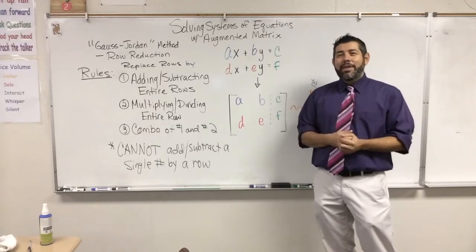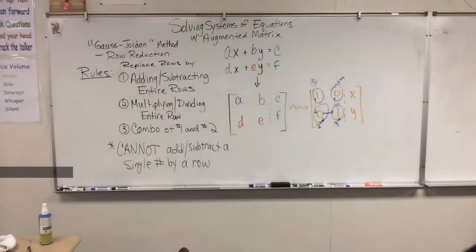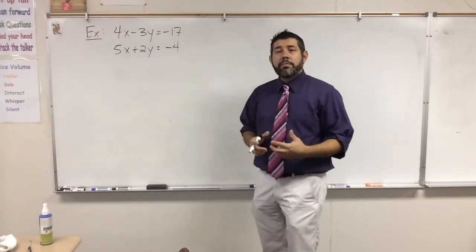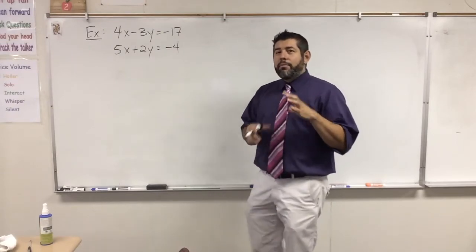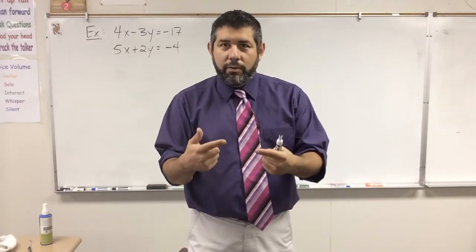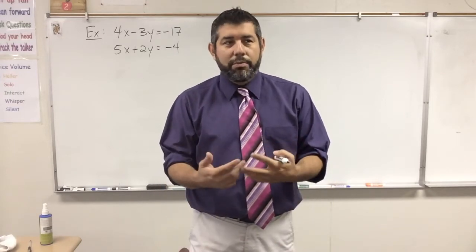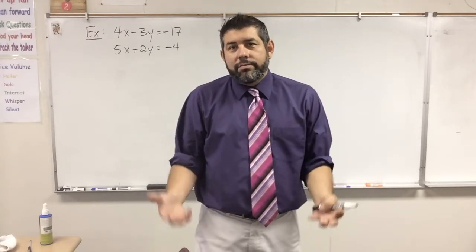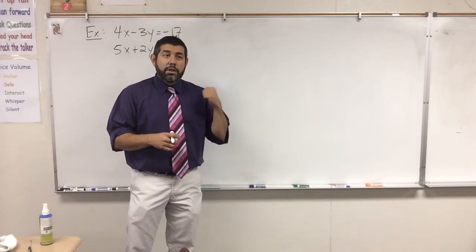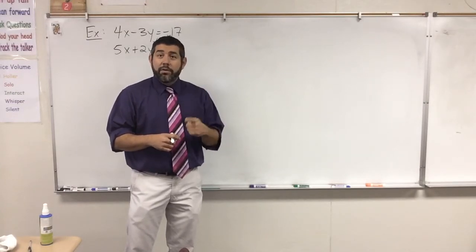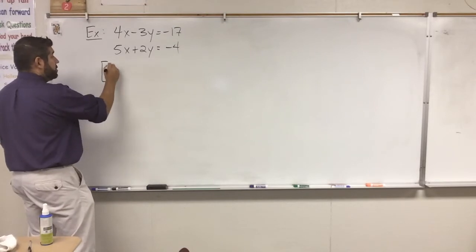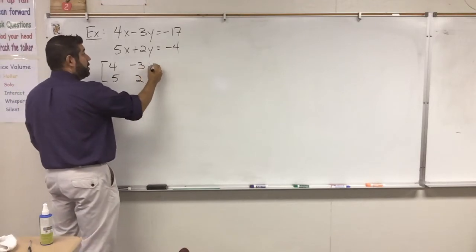I'll do an example and then a practice problem. So we're back with my example — a system of equations — and I'm going to use an augmented matrix and row reduction to solve it. This method does take longer than elimination or substitution, but it's good to know. Also, this is very easily done on a calculator using an augmented matrix — I'll have another video on that. So I'm going to set up my augmented matrix: 4, negative 3, 5, 2, with a dashed line to represent the equals sign.